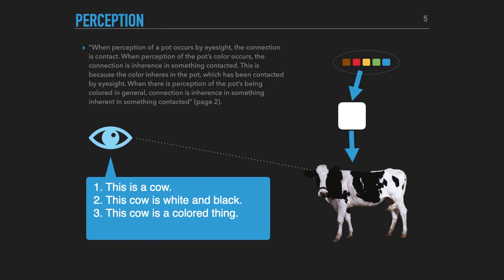We are able to, as he says in this quote, for instance, if I'm looking at a pot, a perception of a pot occurs by eyesight, the connection is contact. When perception of the pot's color occurs, the connection is inherent in something contacted. So I can look at the cow by my eyesight. And I have contact with Bessie the cow. When I have contact with Bessie the cow, she's colored white and black. And, well, what kind of contact am I having? I'm having contact with something that is inherent in the thing contacted. The white color is inherent in Bessie.